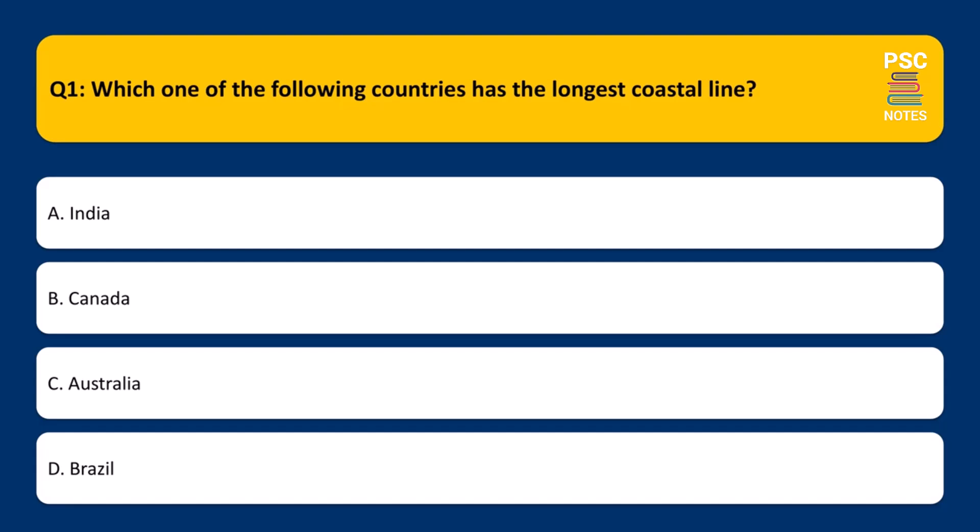Which one of the following countries has the longest coastal line? a. India. b. Canada. c. Australia. d. Brazil.